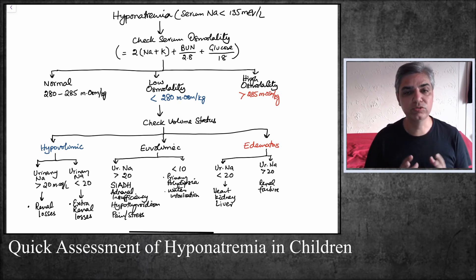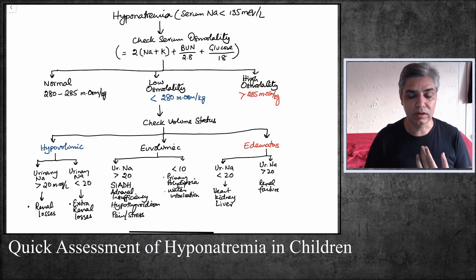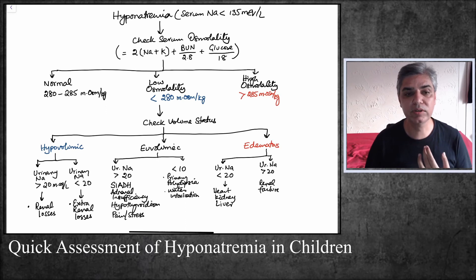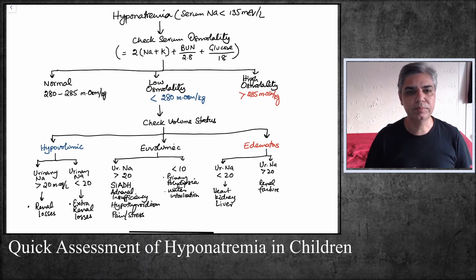A child who is euvolemic — neither edematous nor dehydrated — again requires urinary sodium assessment. If urinary sodium is more than 20, you can have conditions like syndrome of inappropriate antidiuretic hormone (SIADH), adrenal insufficiency, hypothyroidism, or stressful and emotionally distressing conditions. If urinary sodium is less than 10, you are likely dealing with water intoxication or primary polydipsia.